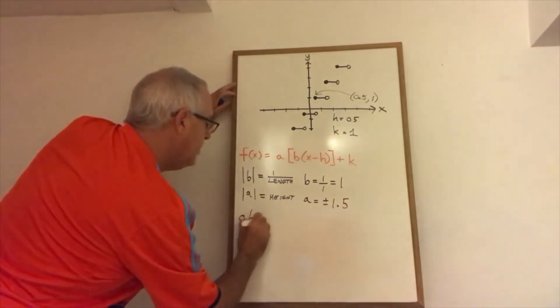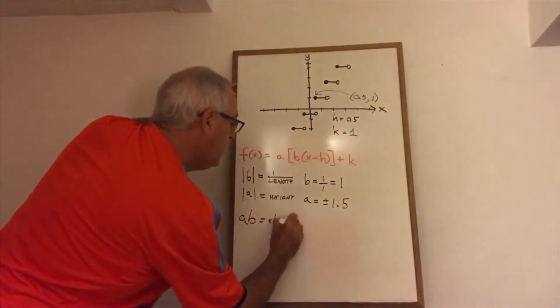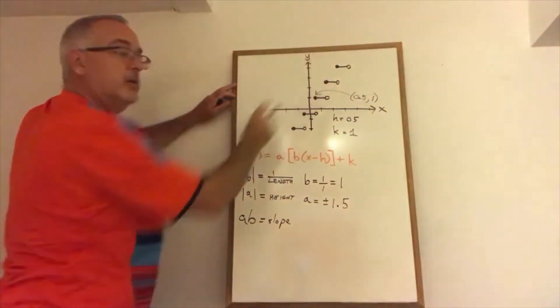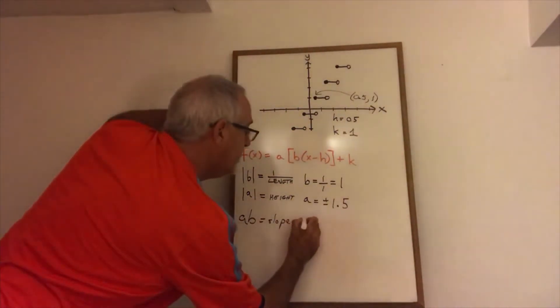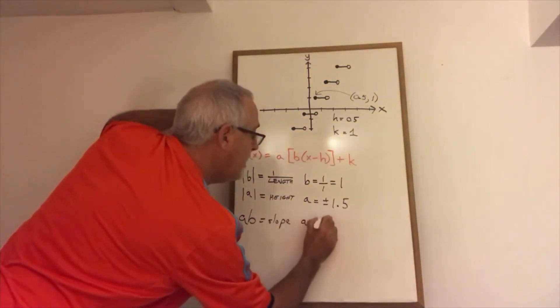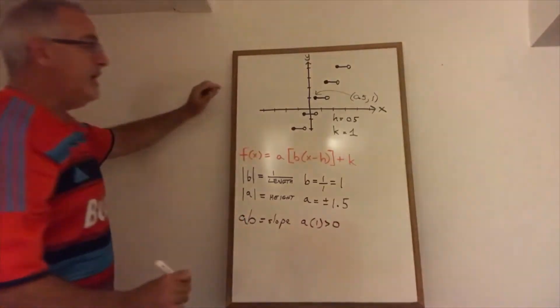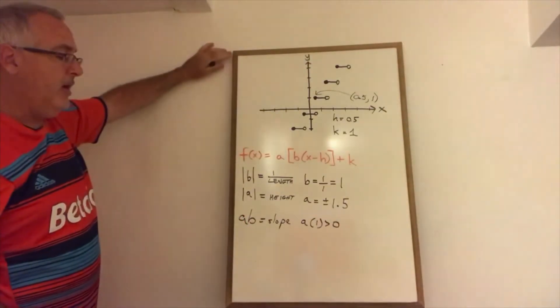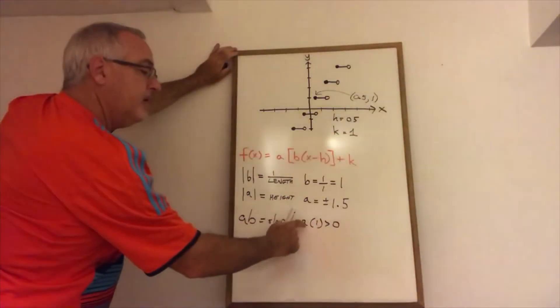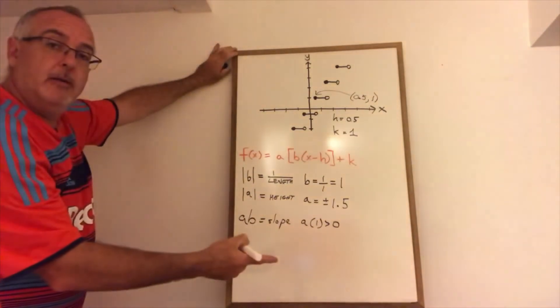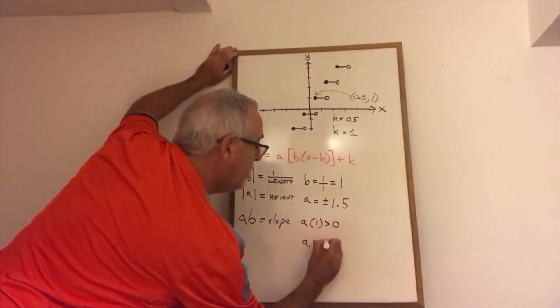ab, the product of a and b gives me the slope of an imaginary line that's connecting all of the closed circles. ab in this case is a times 1 and it has to be positive because I can see a positive slope in that imaginary line. So since b is positive 1, the only way that the product of a and b can be positive is if a is also positive. That means a equals positive 1.5.